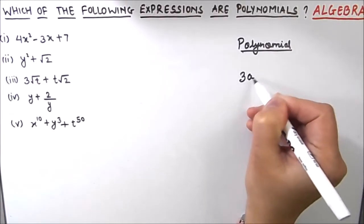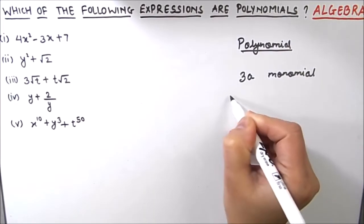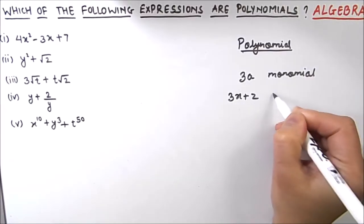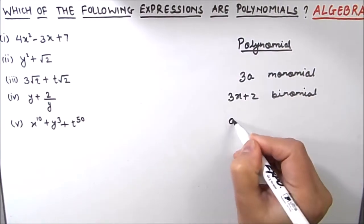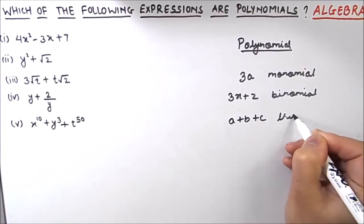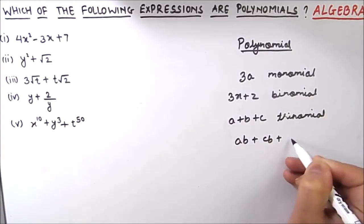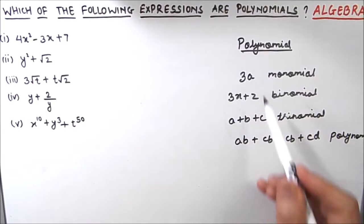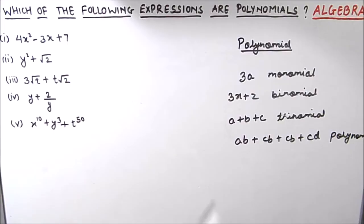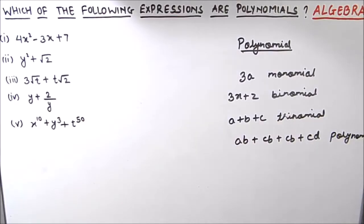A polynomial with a single term is called a monomial. A polynomial with two terms is called a binomial. A polynomial with three terms is called a trinomial. A polynomial can also have more than three terms. So a monomial, binomial, and trinomial are all polynomials.